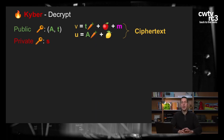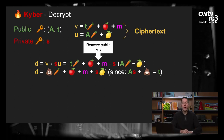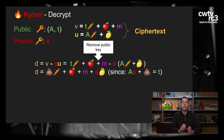Wir wollen nicht nur Sachen verschlüsseln, sondern wir wollen sie auch entschlüsseln. Wie passiert das in Kyber? Wir haben den privaten Schlüssel – der öffentliche Schlüssel verschlüsselt, der private Schlüssel entschlüsselt. Um zu entschlüsseln, müssen wir den öffentlichen Schlüssel-Anteil entfernen: V minus privater Schlüssel mal U. Wenn man das ausschreibt, ist es ziemlich lang, aber wenn man die Emojis und Fehlerwerte anschaut, fällt der gesamte öffentliche Schlüssel weg. Das Ergebnis D enthält unsere Nachricht, einige Fehler und den privaten Schlüssel.